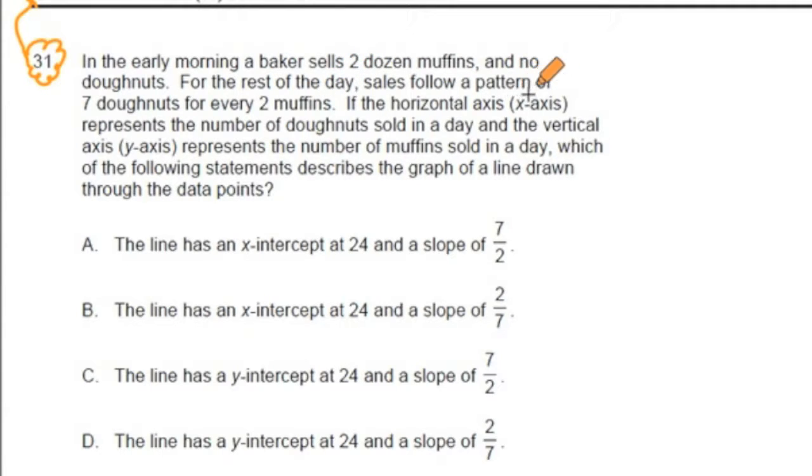If the horizontal axis (x-axis) represents the number of doughnuts sold in a day and the vertical axis (y-axis) represents the number of muffins sold in a day, which of the following statements describes the graph of a line drawn through the data points? And then we have some options.